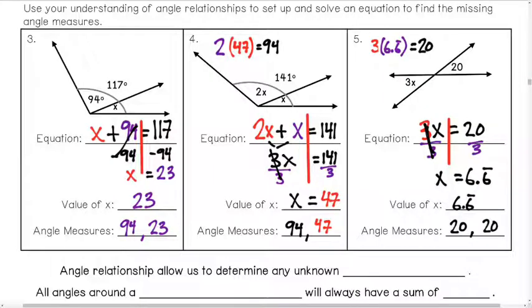Now, angle relationships allow us to determine any unknown angle measure, and then all angles around a point or vertex will always have a sum of 360. So we know that when two lines intersect like this up here, that their angle measures, we can find some missing values based off of what we know, but that the total amount here is always going to equal 360, and half of it will equal 180.